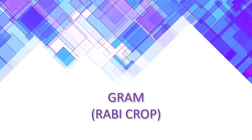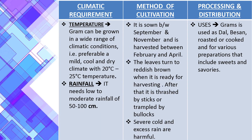Now we will talk about Gram. Gram is like black chana or white chana. It accounts for nearly 37% of total pulse production in India. For climatic conditions, Gram can be grown in a mild, dry climate with a temperature of 22 to 25 degrees Celsius.